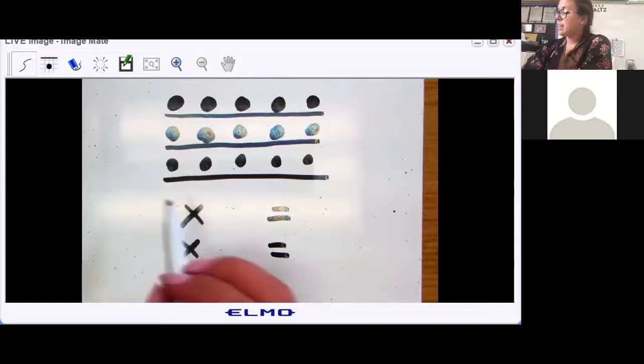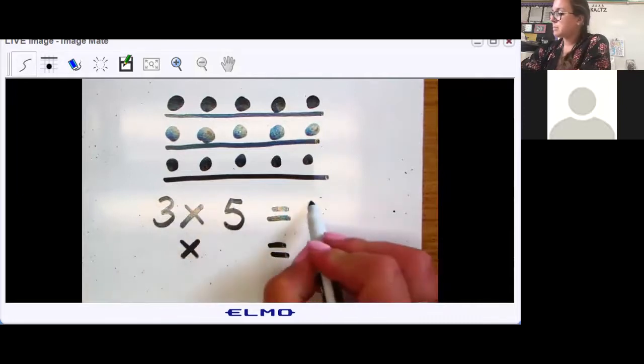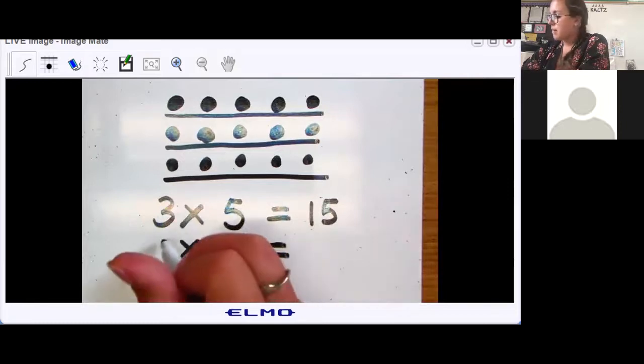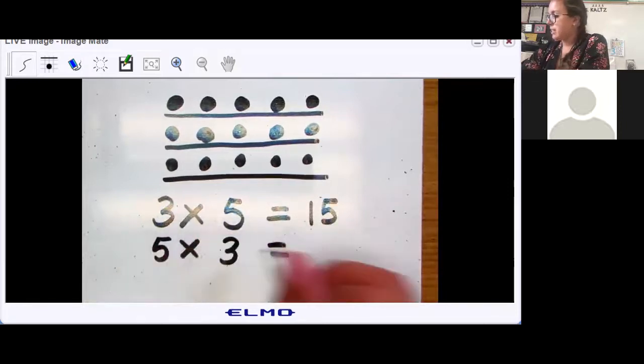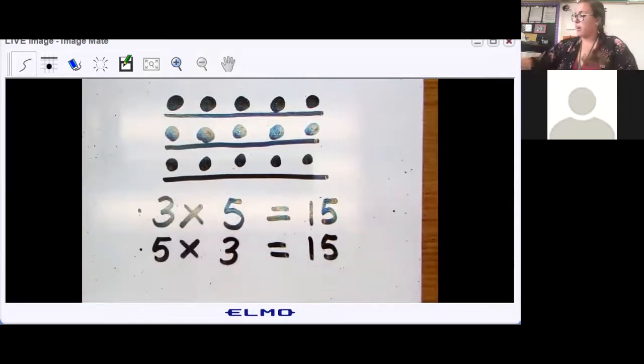All right, now that you tried it on your own, you should have written three times five equals 15, or five times three equals 15. You should have written both of those, they are both correct.